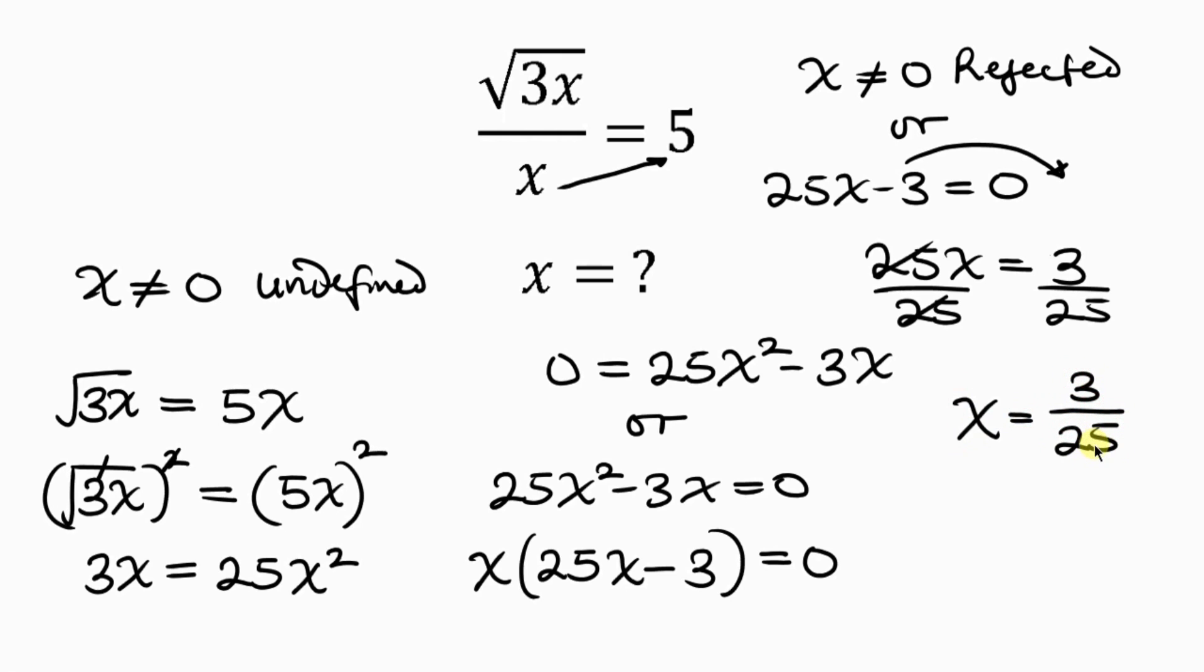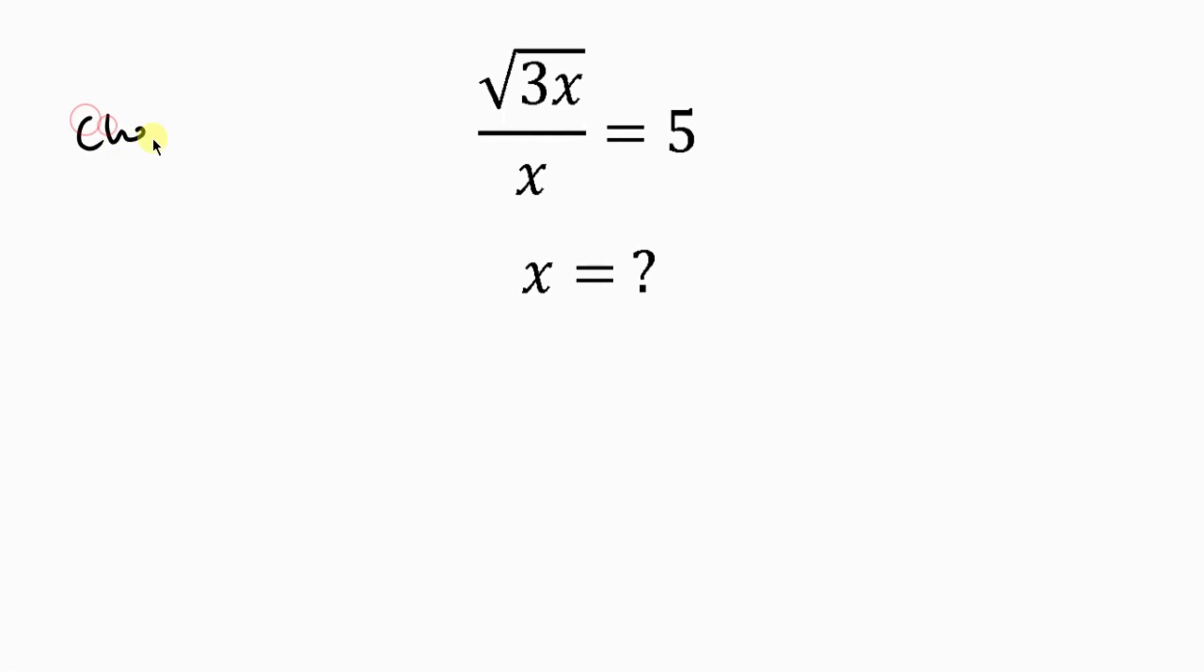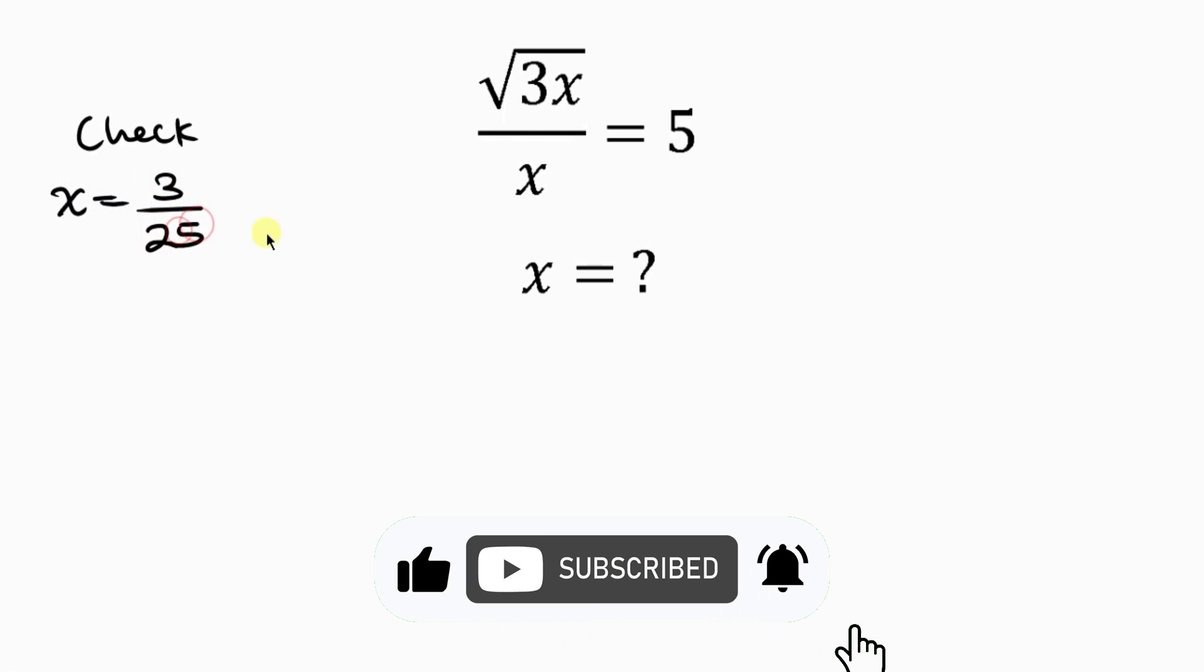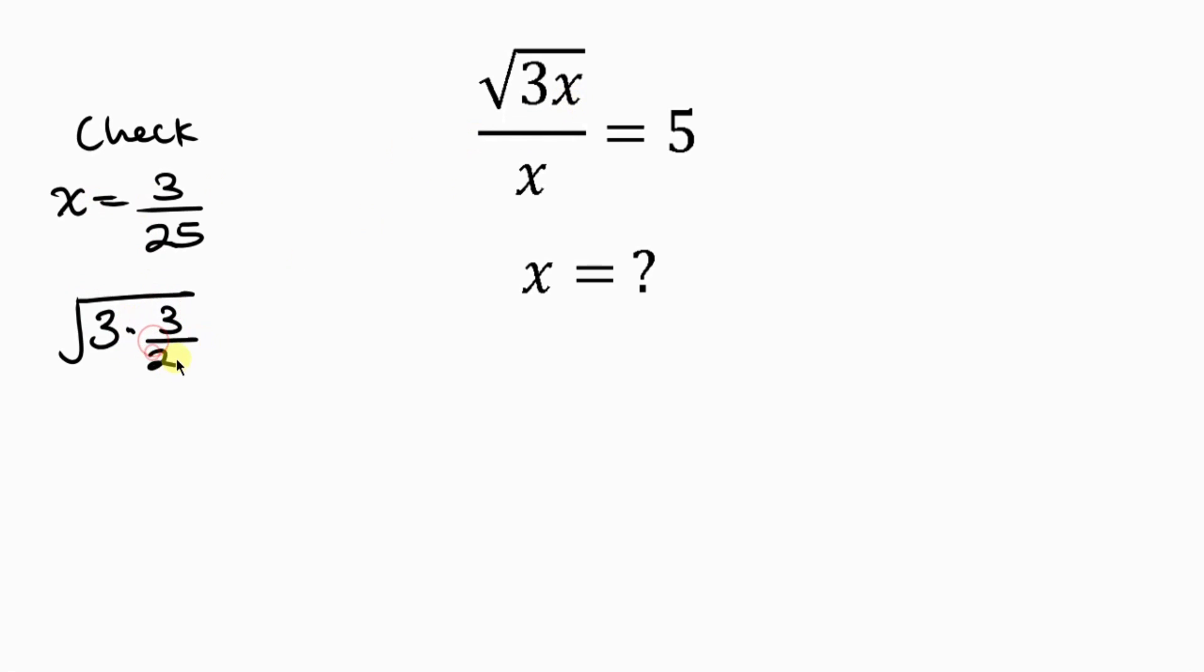Now, let's check. On checking, we're going to be putting x equal to 3 over 25 in our original equation. So, we have the square root of 3 times x—x is 3 over 25—all over x, x is 3 over 25.